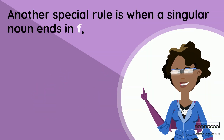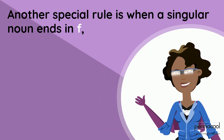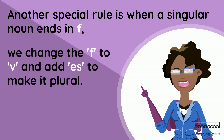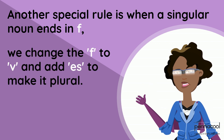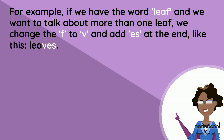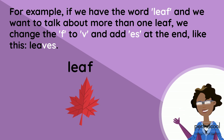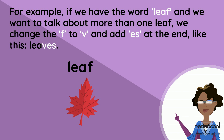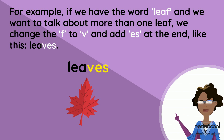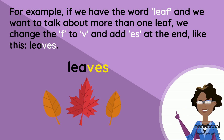Another special rule is when a singular noun ends in F, we change the F to V and add ES to make it plural. For example, if we have the word leaf and we want to talk about more than one leaf, we change the F to V and add ES at the end like this. Leaves.